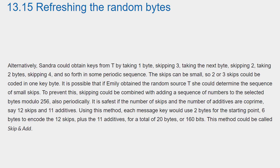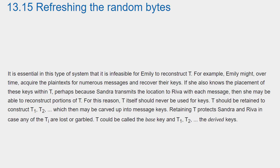It is safest if the number of skips and the number of additives are co-prime — say, 12 skips and 11 additives. Using this method, each message key would use two bytes for the starting point and six bytes to encode the 12 skips plus the 11 additives, for a total of 20 bytes or 160 bits. This method could be called skip-and-add.